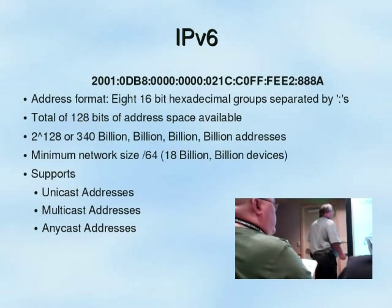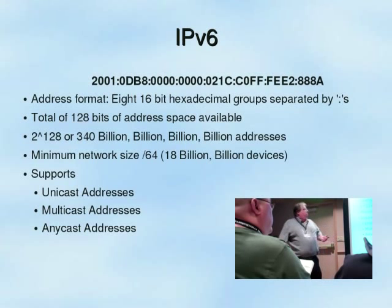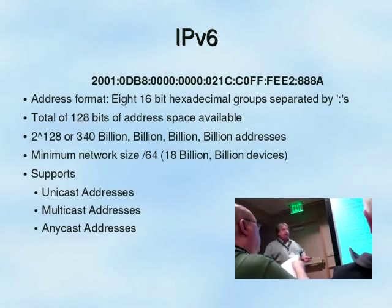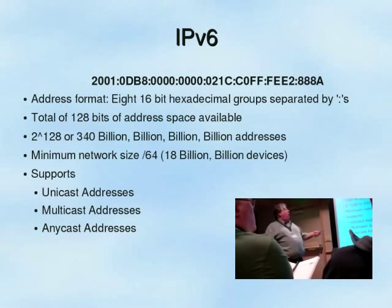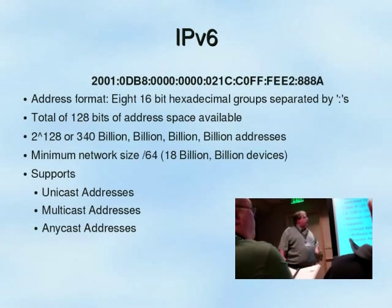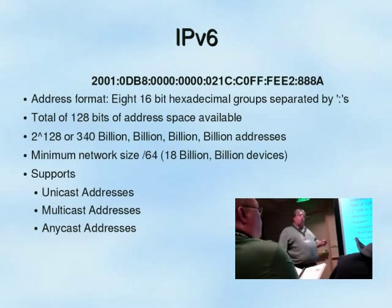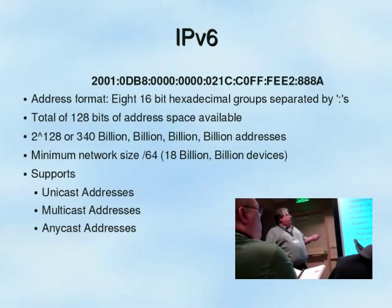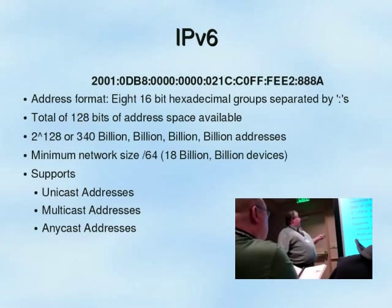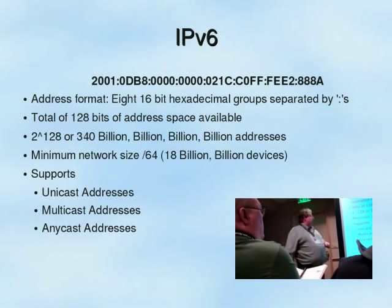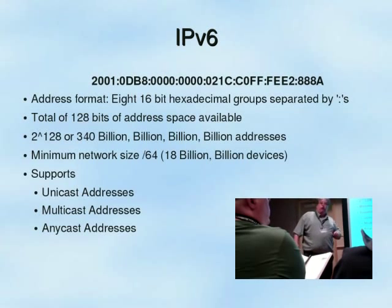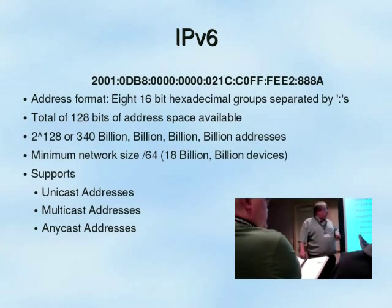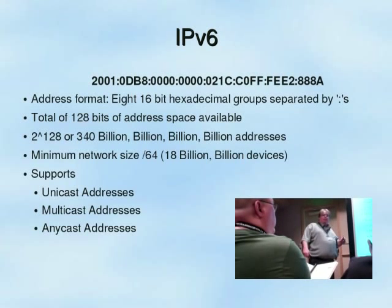I'm going to go over some very boring stuff as quickly as I can. For the people that haven't had any exposure to IPv6, the address format is long and frightening. We've got eight 16-bit hexadecimal groups separated by colons, making for a really difficult address to read. The total number of bits in the address space is 128 — that's 2 to the 128th, or 340 billion billion billion billion addresses. Enough addresses to replace the grains of sand on all the planets in our solar system.